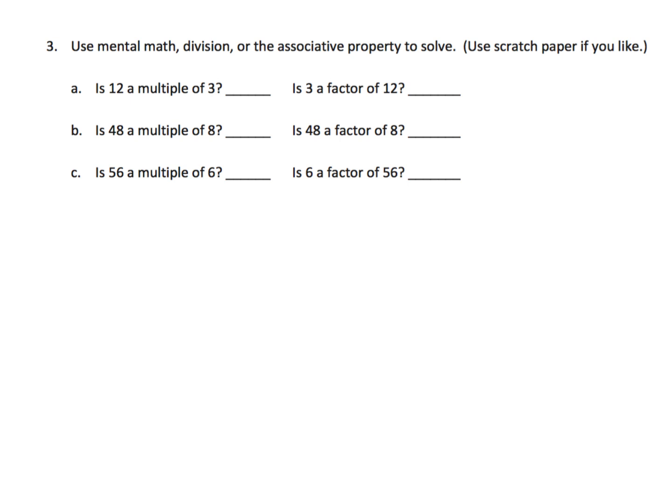Now here, using mental math, division, or the associative property, we need to figure out, let's do A. Is 12 a multiple of 3? Well, one idea would be 3, 6, 9, 12, dot, yep. 12 is indeed a multiple of 3. Another way we could think of it is, well, 3 times 4 is 12. You can multiply by 3 to get 12.